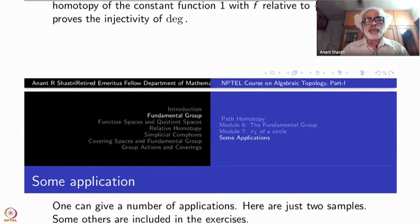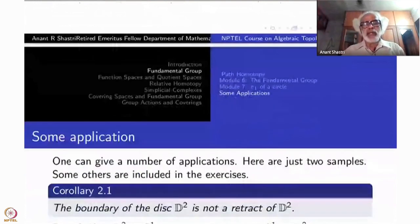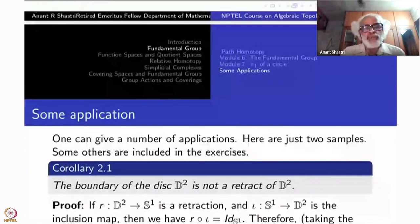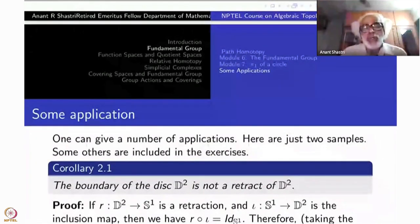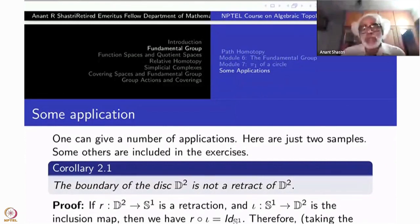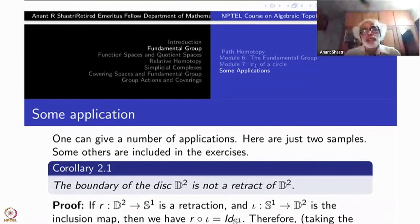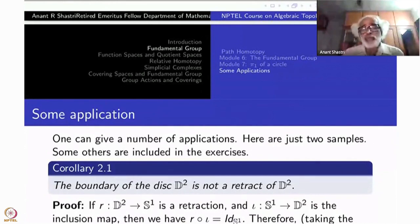Right now we can give one very important application, namely Brouwer's Fixed Point Theorem for two-dimensional disks. Not in general — in general it will take more time. So first we will prove that the boundary of the disk D² is not a retract of D². That means there is no continuous function R from D² to S¹ which is identity on S¹.